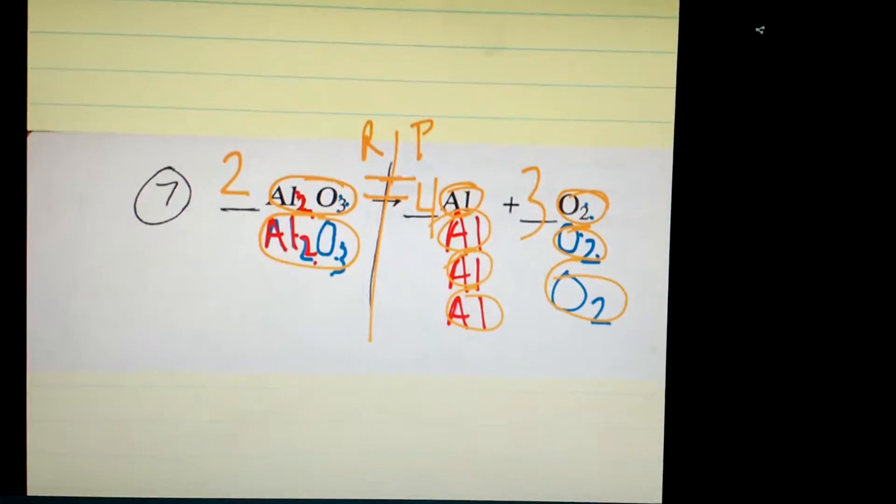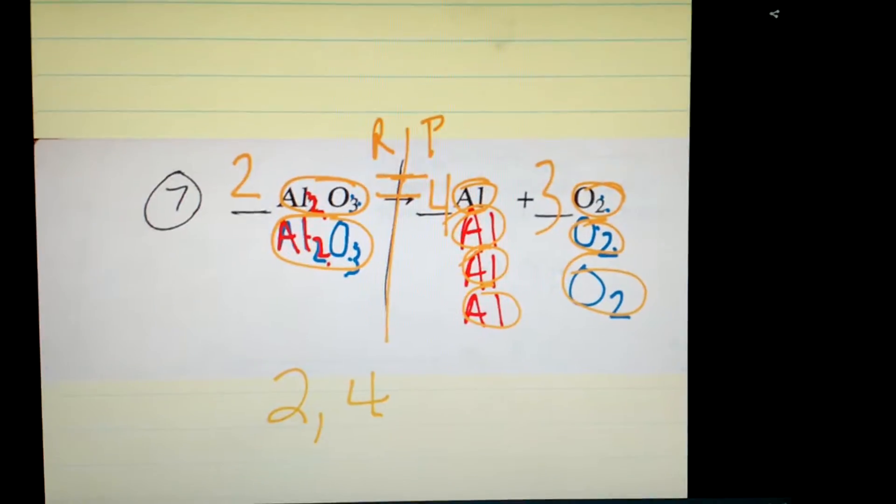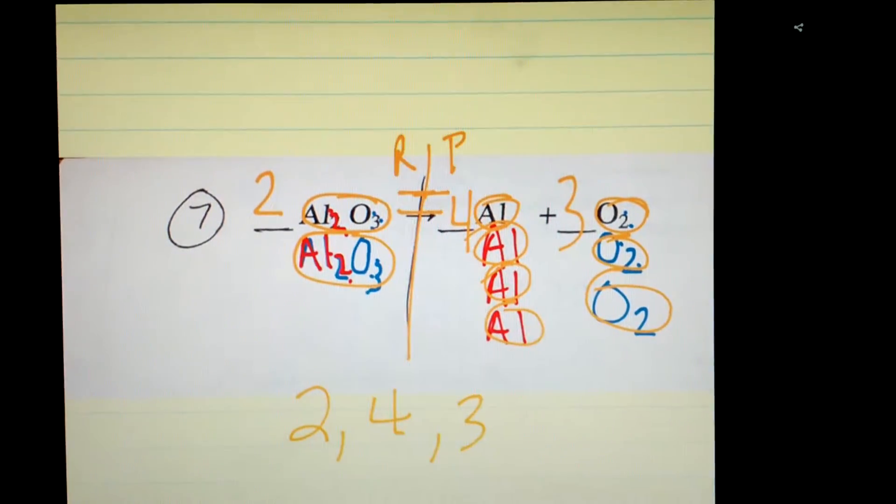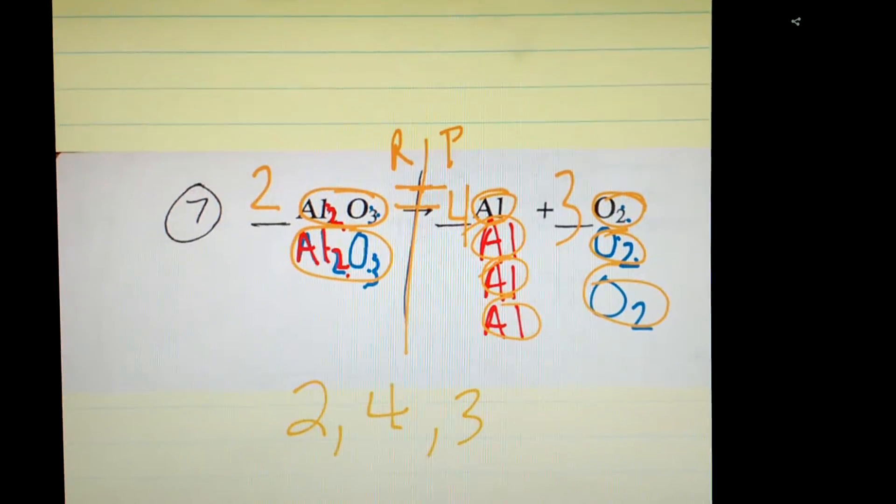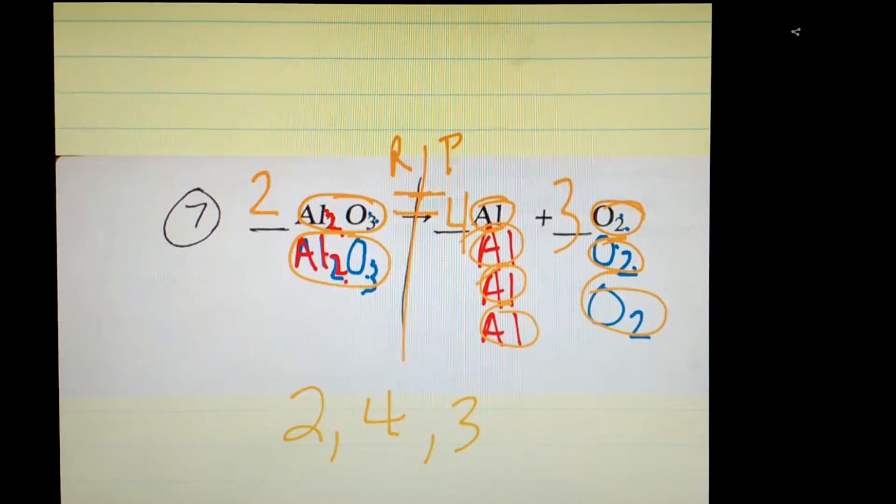And you had it written three times. Your coefficients are two, four, three. That can't be simplified because you can't divide anything to make those numbers smaller than what they are and still end up with whole numbers.